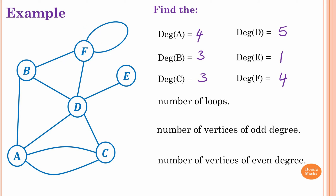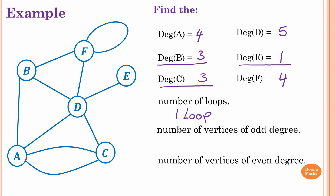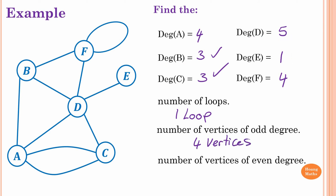The number of loops in this network is one. The number of vertices of odd degree: B has degree 3, C has degree 3, E has degree 1, and D has degree 5 — so there are four vertices of odd degree. The number of vertices of even degree: A has degree 4 and F has degree 4 — so there are two vertices of even degree.